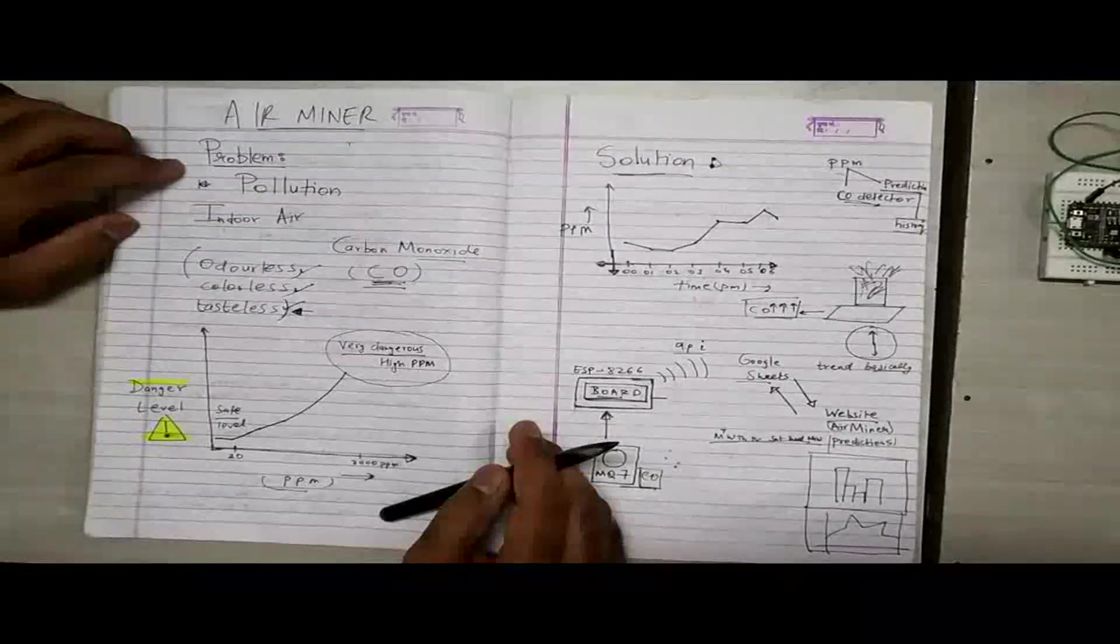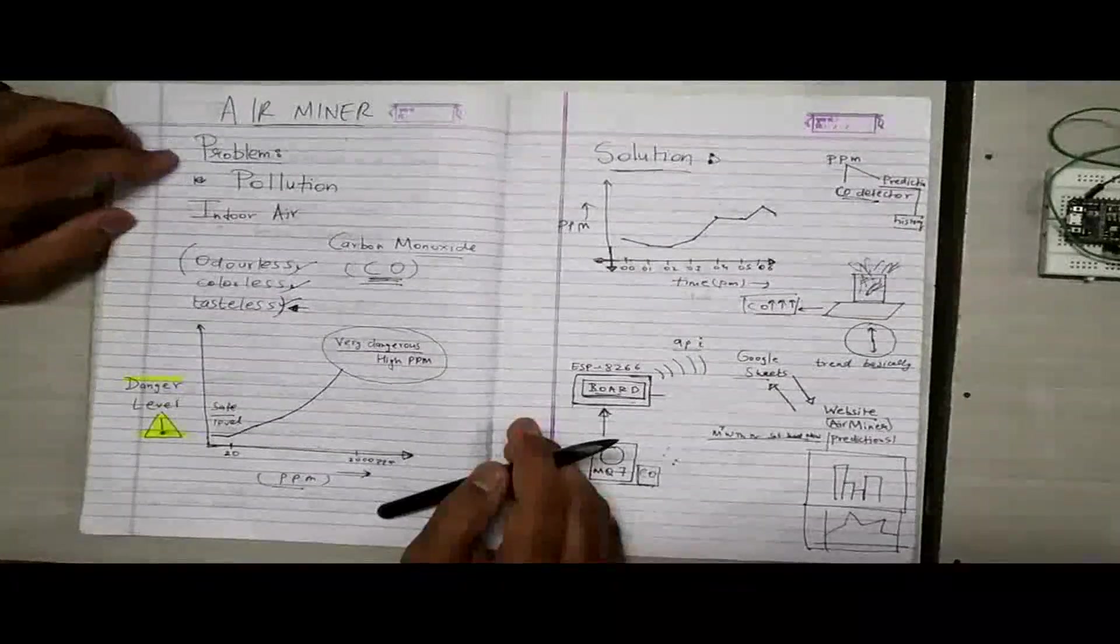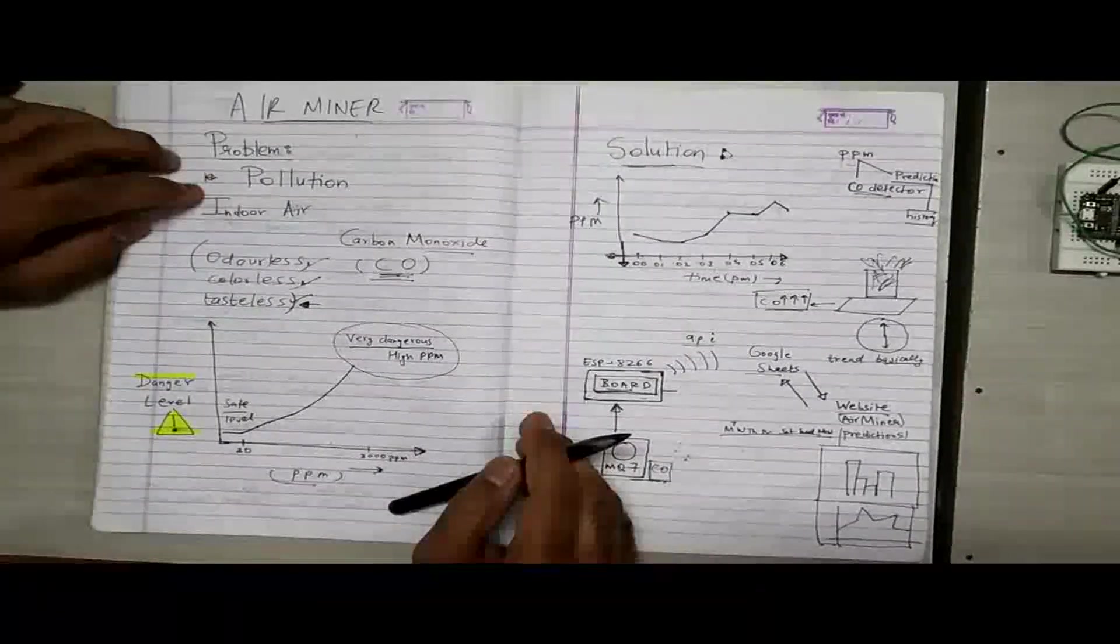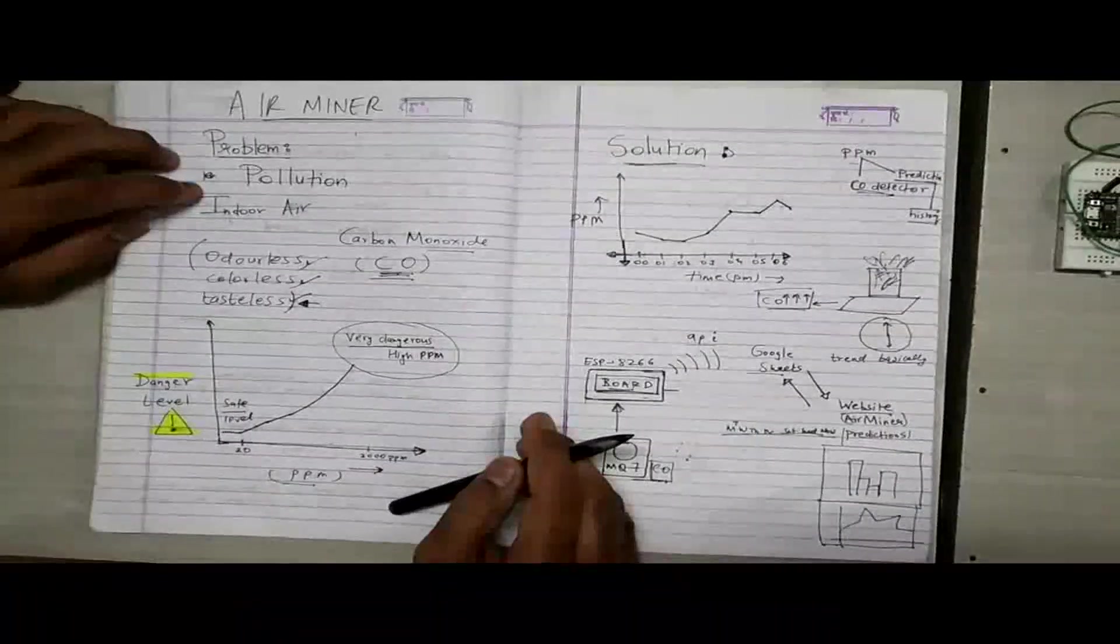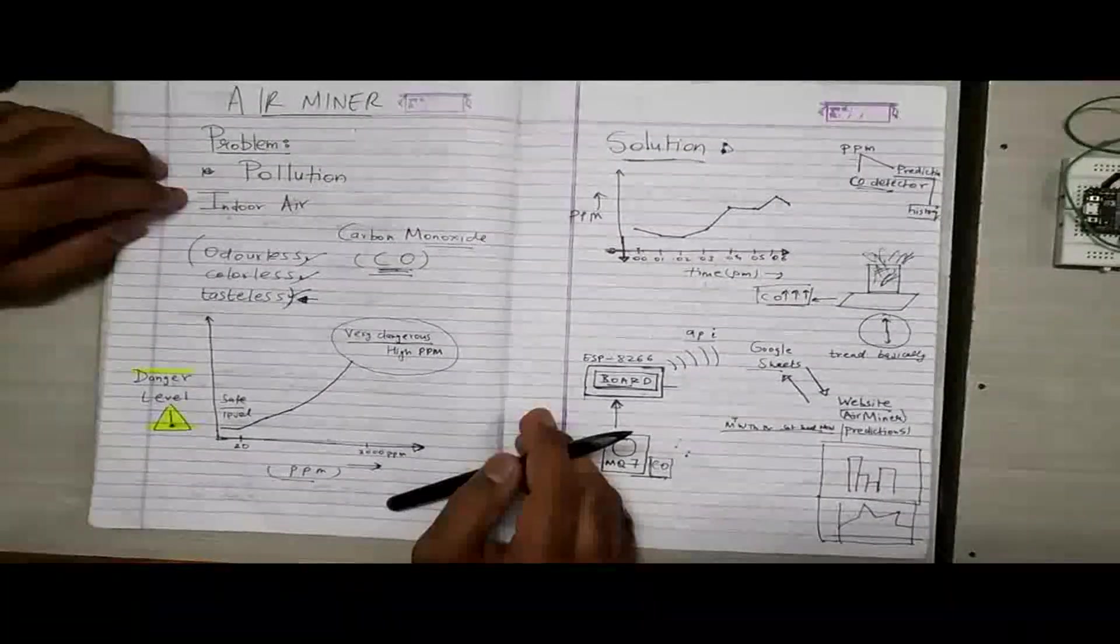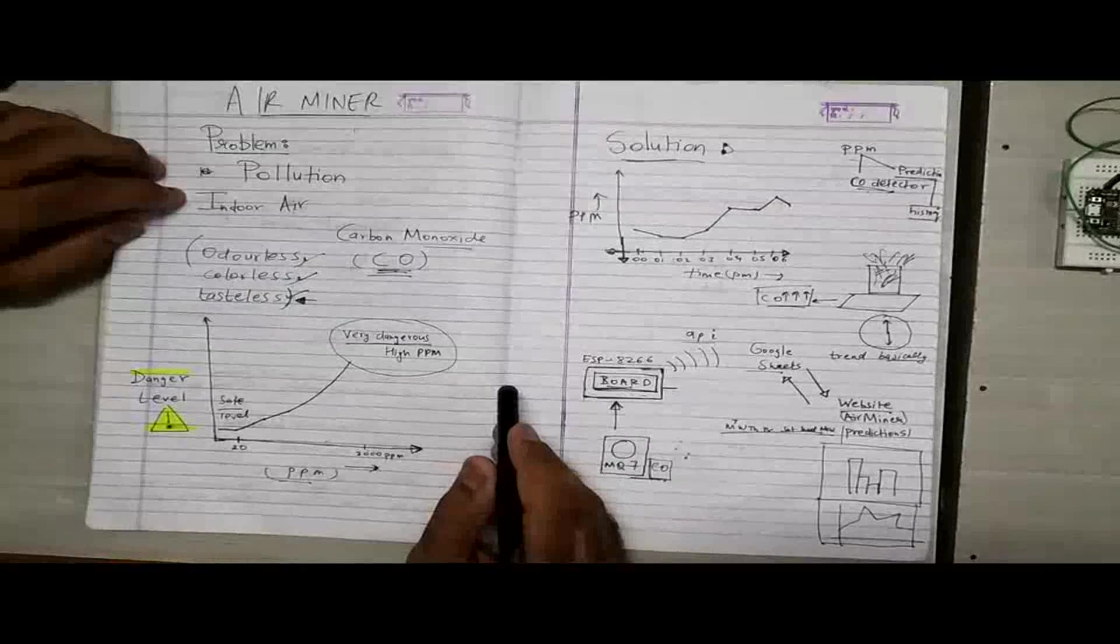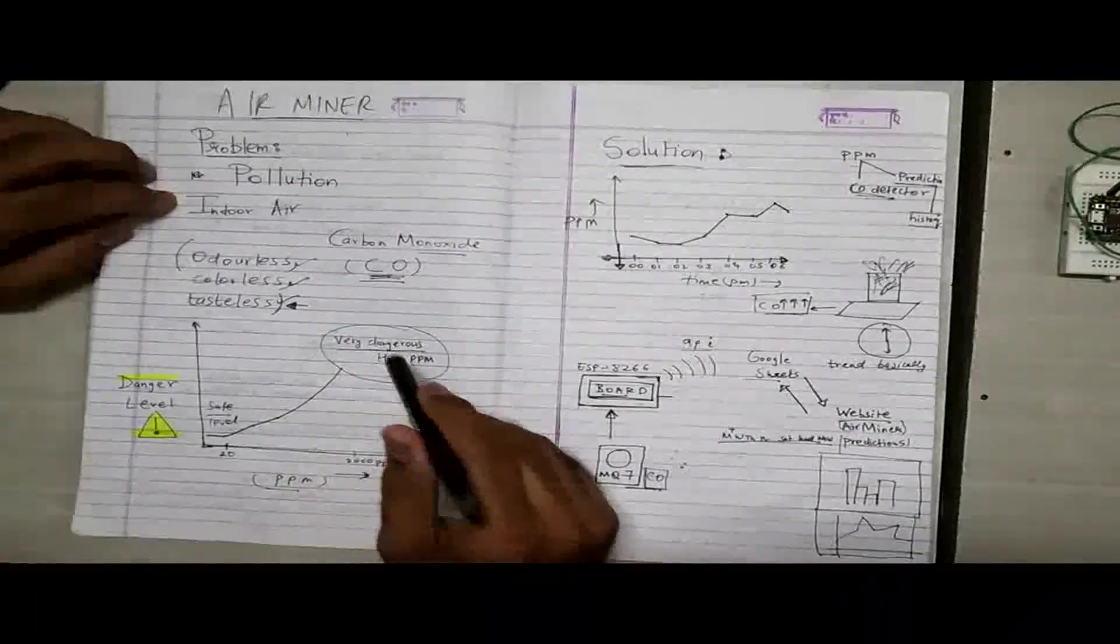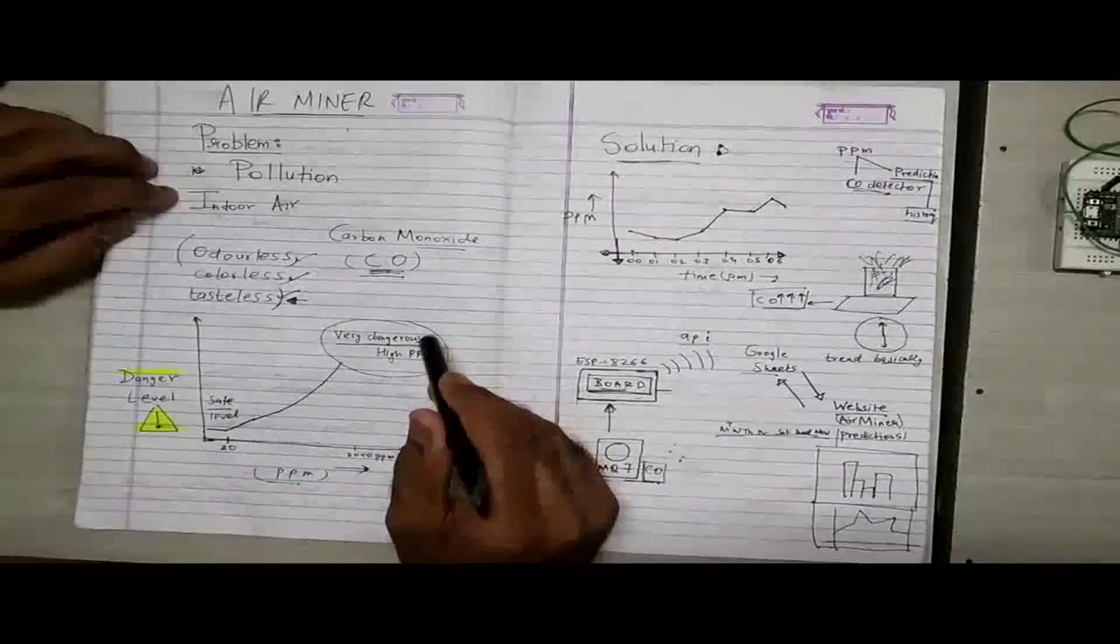Every good product starts with a good problem. In our case also, the problem was simple: indoor air pollution. How do we tackle it? Well, one thing that we could have done is to build air purifiers but we did not do that. Our aim was to let the users of our product know when the PPM levels of carbon monoxide, an odorless, colorless, tasteless gas, would go higher in their house.